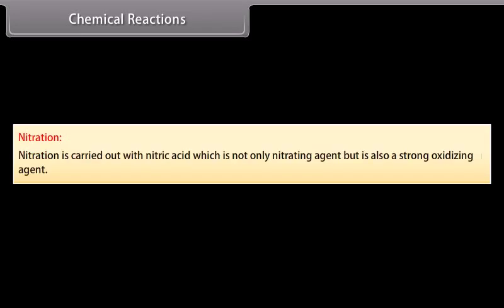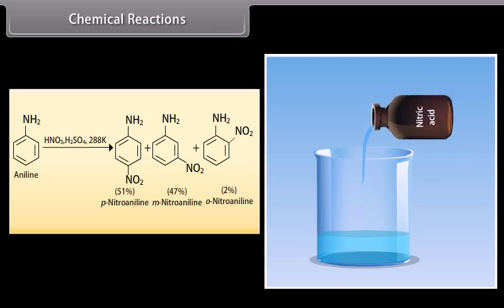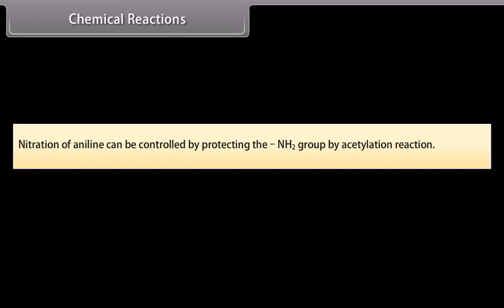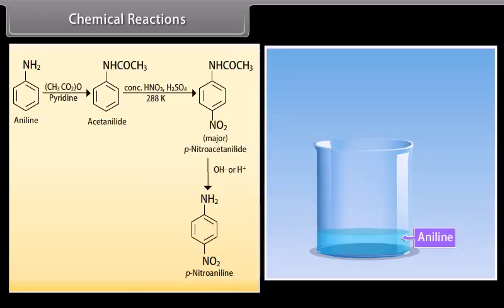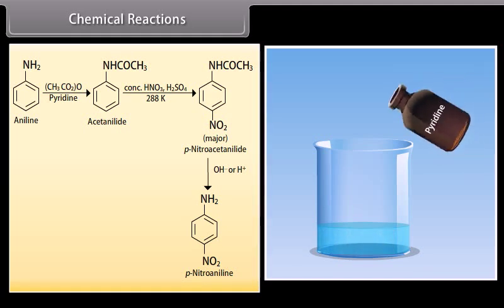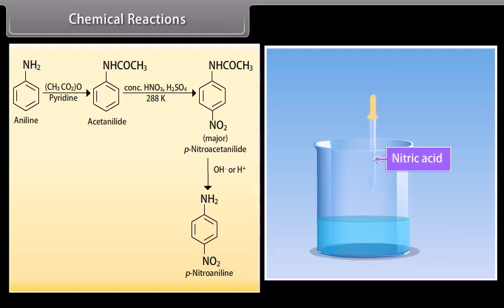Nitration: Direct treatment of aniline with nitric acid leads to oxidation of the highly activated benzene ring, resulting in complex tarry oxidation products. Therefore, nitration of aniline is controlled by protecting the NH₂ group via acetylation. Aniline reacts with acetic anhydride and pyridine to form acetanilide. Adding concentrated nitric acid and sulfuric acid at room temperature gives p-nitroacetanilide, and subsequent hydrolysis produces p-nitroaniline.